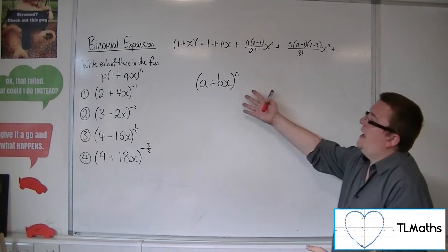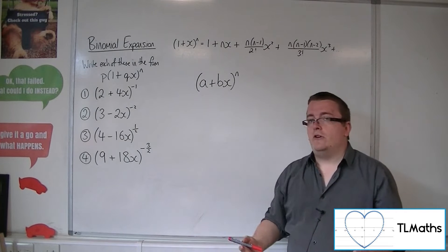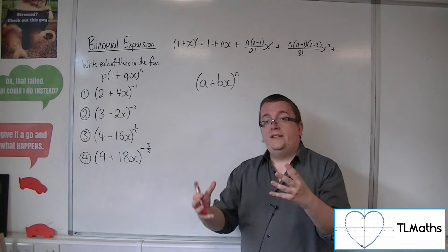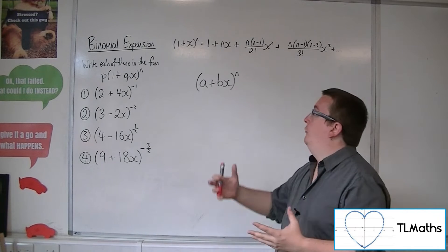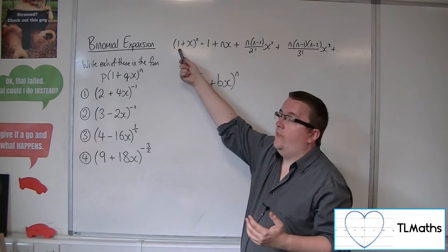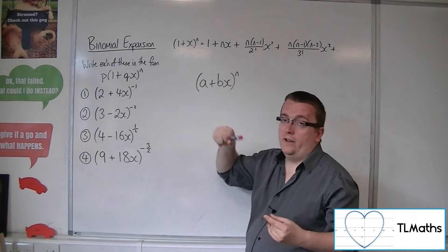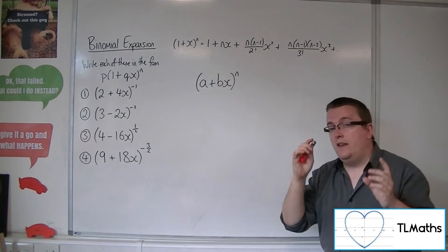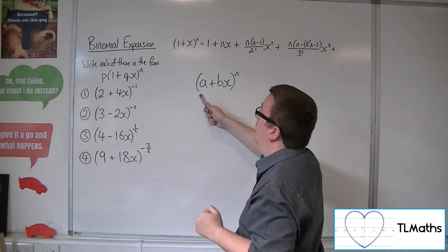So if I had, just in the generic case, a plus bx all to the n, what I need is to get it into the format of 1 there, either plus or minus whatever x. That doesn't matter. But that number there needs to be 1, not a.